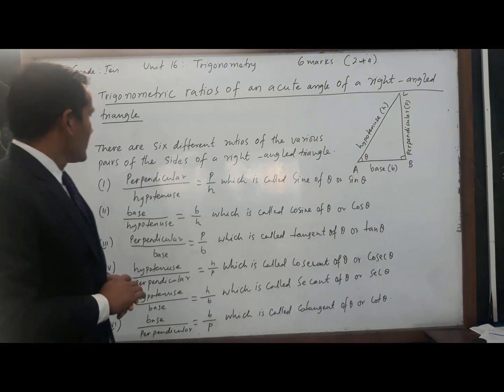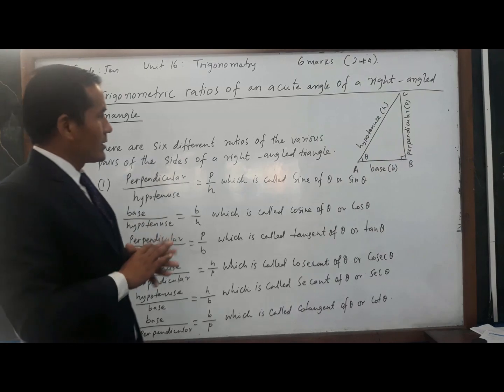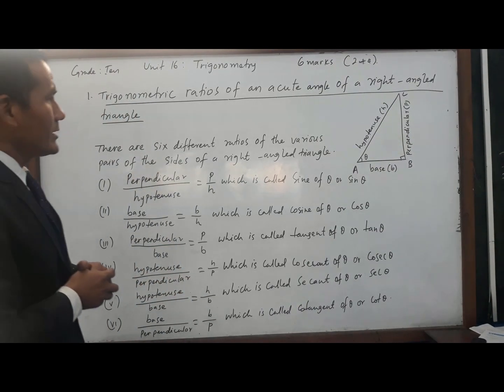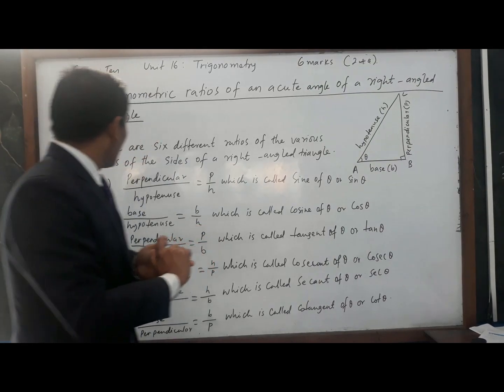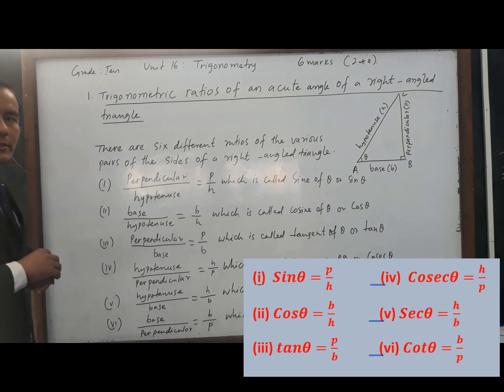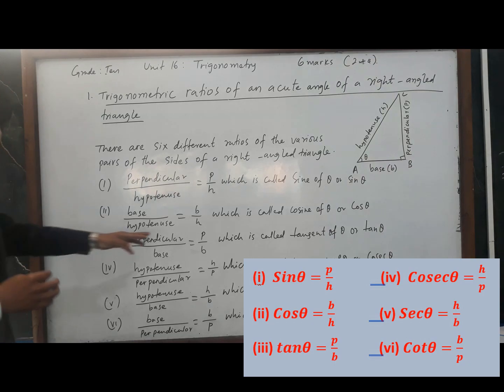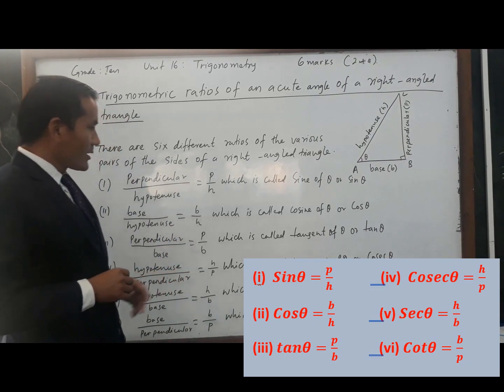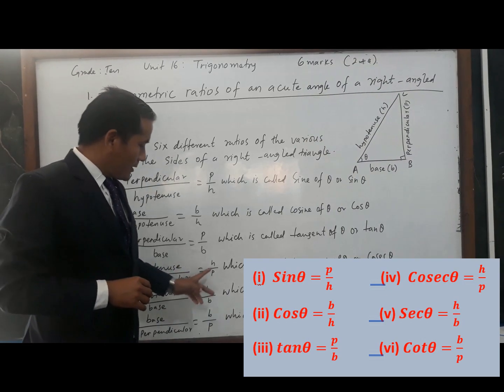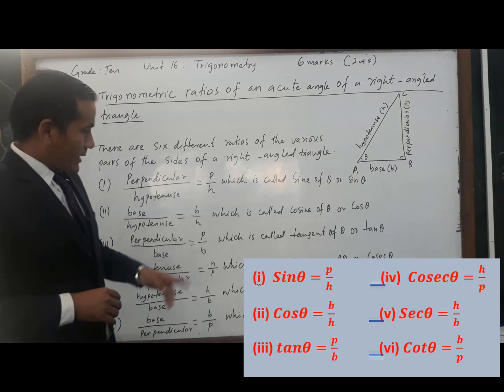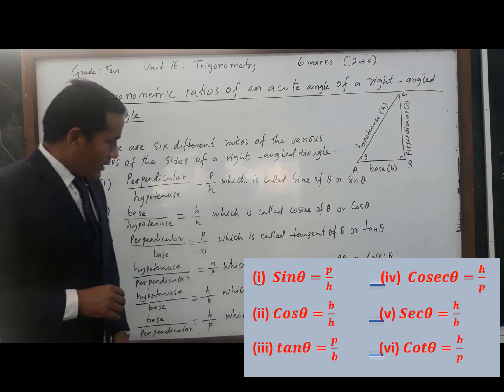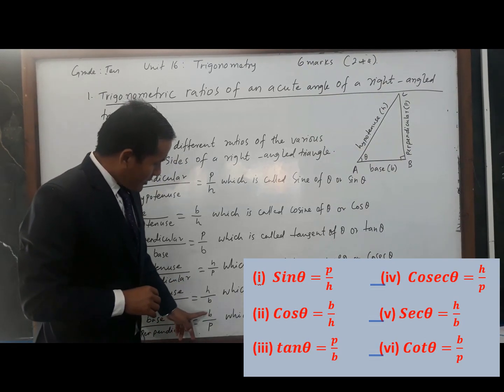There are six different ratios we have learned so far. Only six ratios we can draw or write from these three sides of a right angle triangle. Now, how you remember: sine theta equals P by H, cos theta equals B by H, tan theta equals P by B, cosec theta equals H by P, sec theta equals H by B, and cot theta equals B by P.